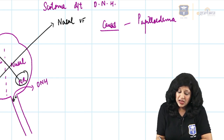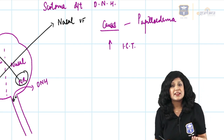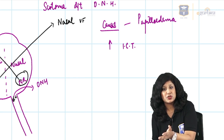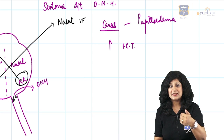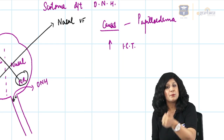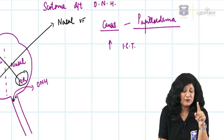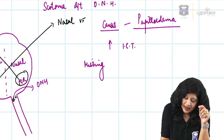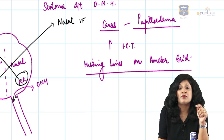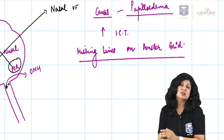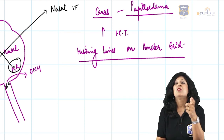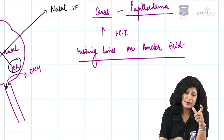For papilledema causing blind spot enlargement, the patient should show signs of raised ICP: throbbing headache, projectile vomiting, amaurosis fugax, and transient obscuration of vision, along with a cause such as trauma, tubercular meningitis, or a space-occupying lesion. Furthermore, since this would be an optic nerve defect, the Amsler grid would show missing lines, not wavy lines. Wavy lines indicate macular pathology, so enlarged blind spot is unlikely.